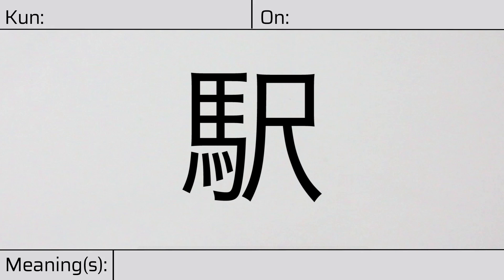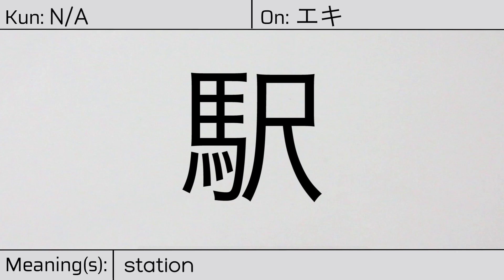Welcome to this lesson on Japanese kanji. Today, we'll be discussing this character. This kanji has no kunyomi or Japanese readings, but it has an onyomi or Chinese reading of eki. This character has the meaning station, as in train station. Here is the stroke order.